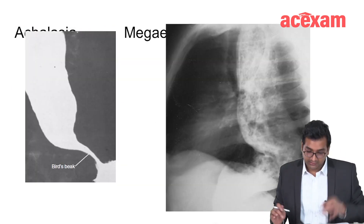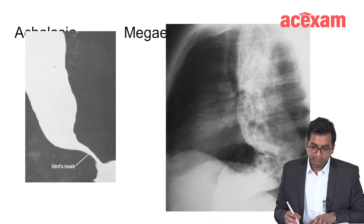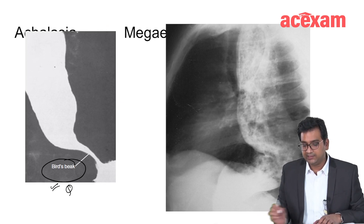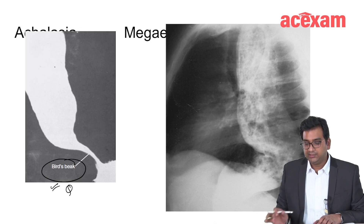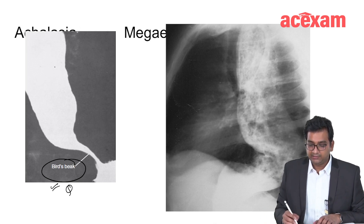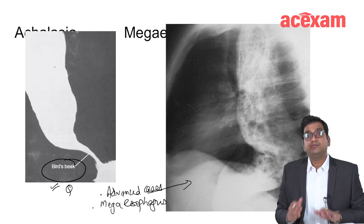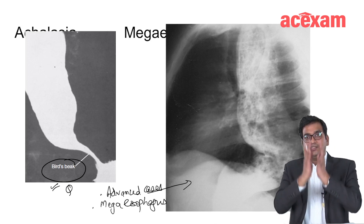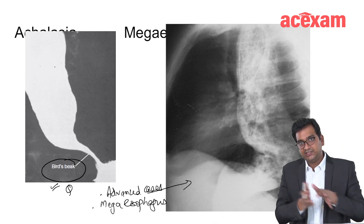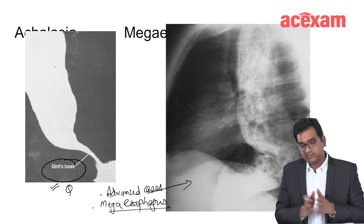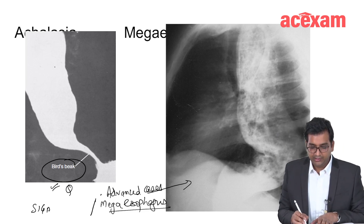The bird beak, rat tail, or pencil tip appearance is seen in achalasia cardia. In advanced cases, there is development of megaesophagus due to chronic constriction at the lower end causing massive dilatation of the esophagus. It may also change its axis, known as sigmoid esophagus.